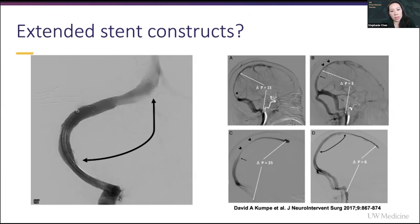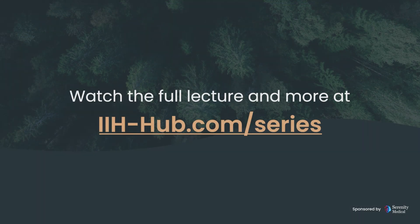One of the pitfalls they mentioned is that the gradient may have been measured from too close. If they had actually measured the gradient from further out, the post-stent gradient would have been much larger than three and would have clued them into stenting further along the superior sagittal sinus. Thank you.